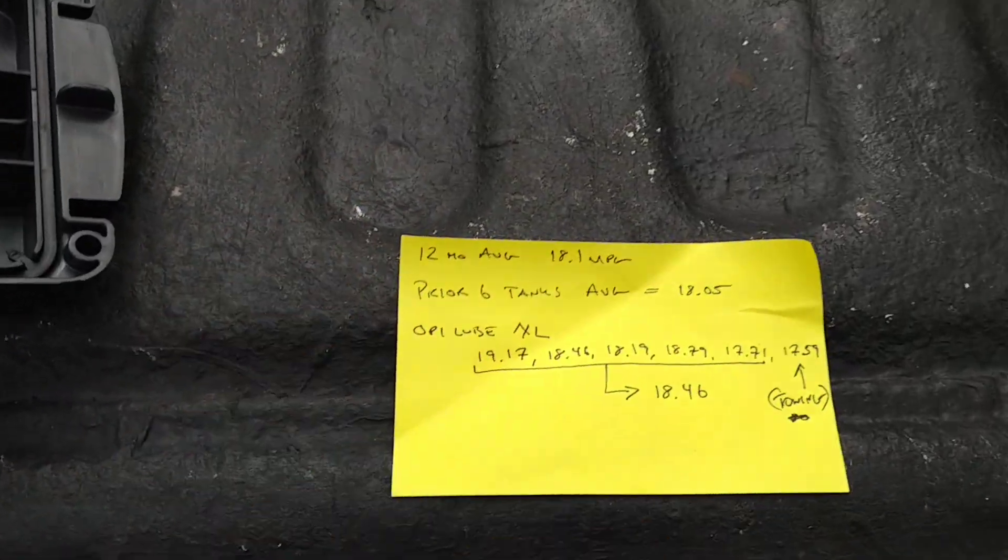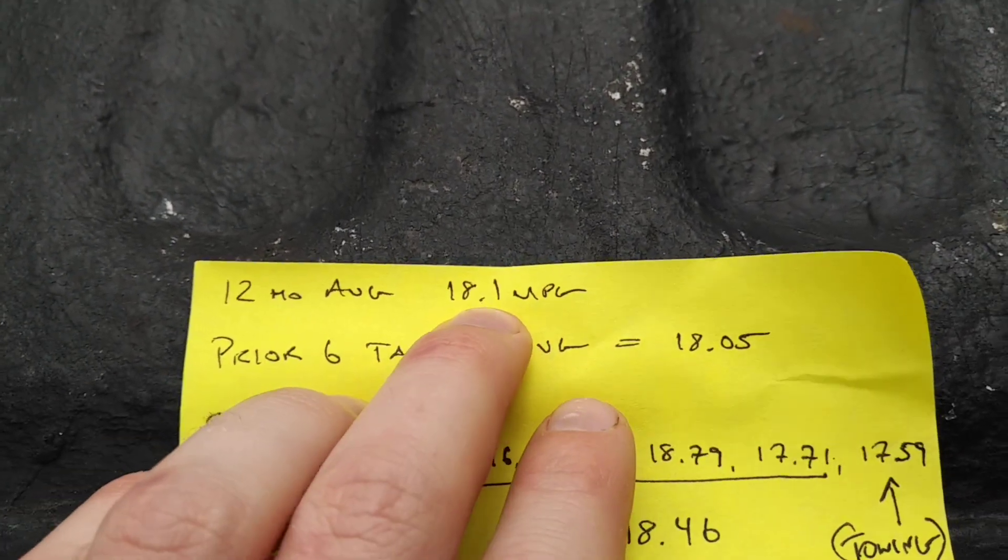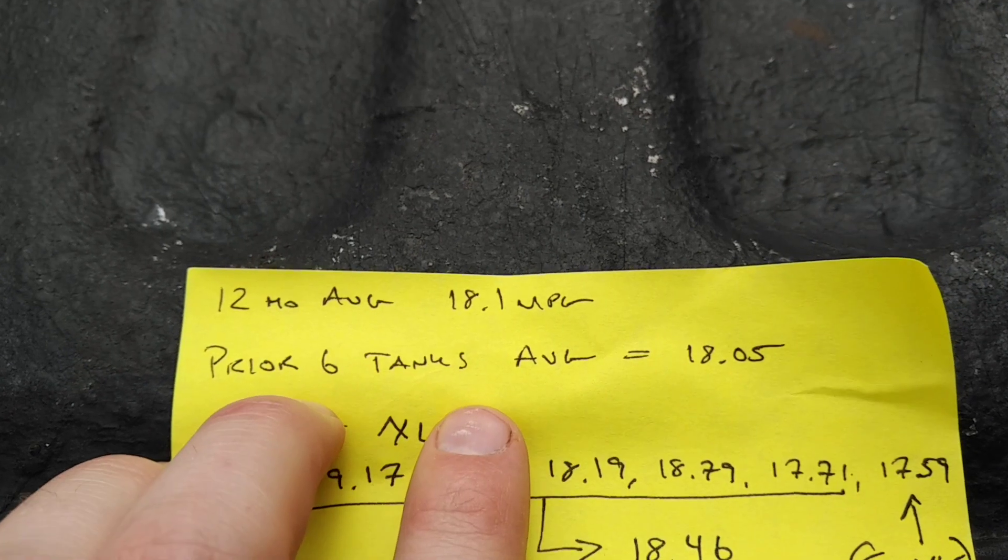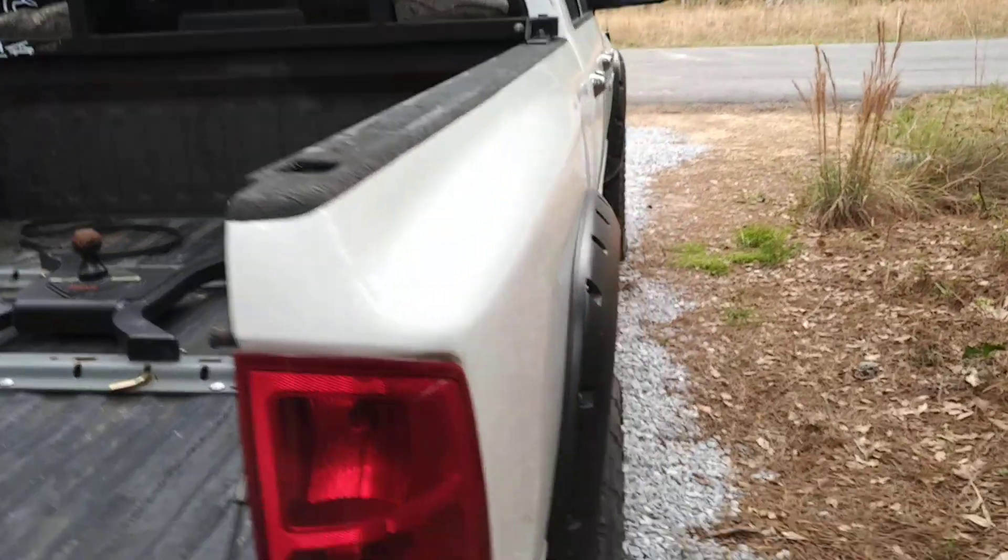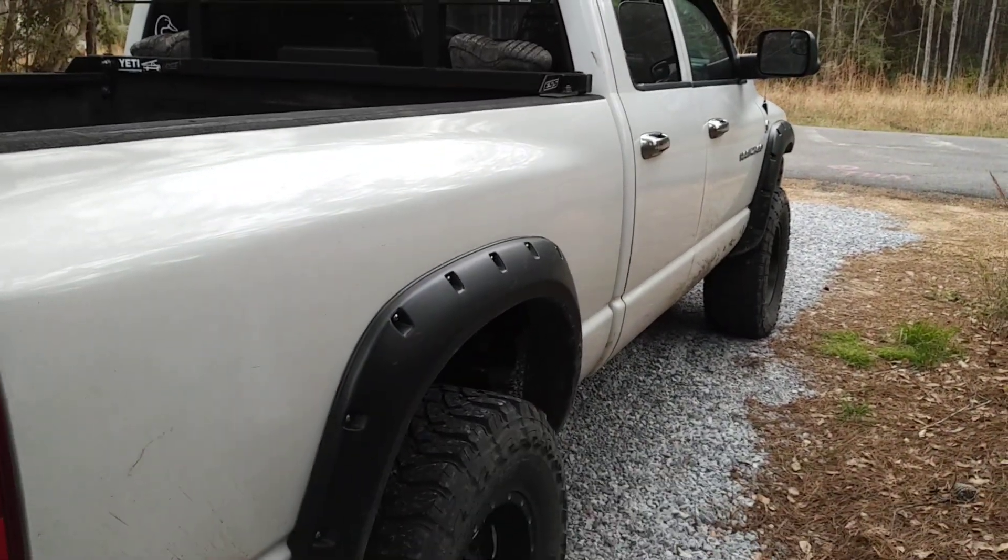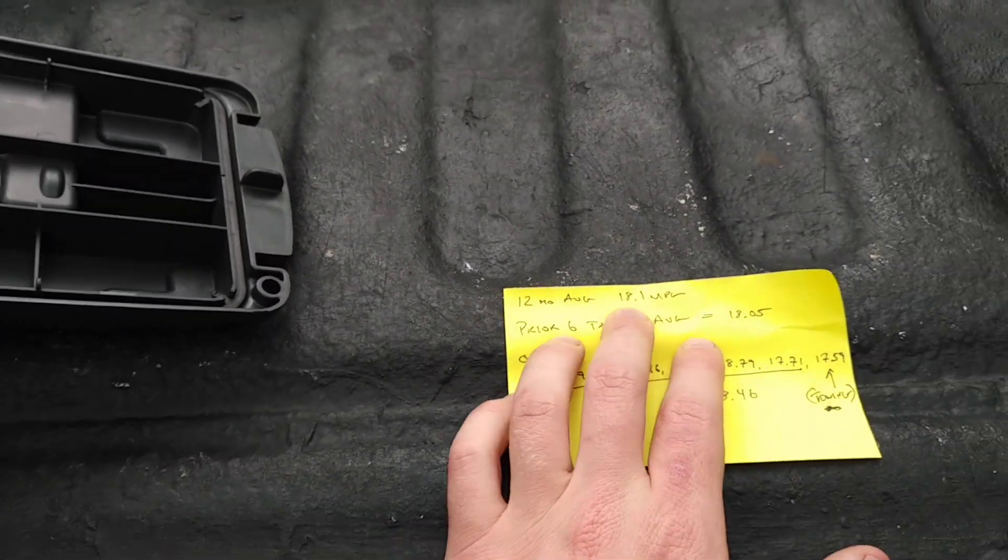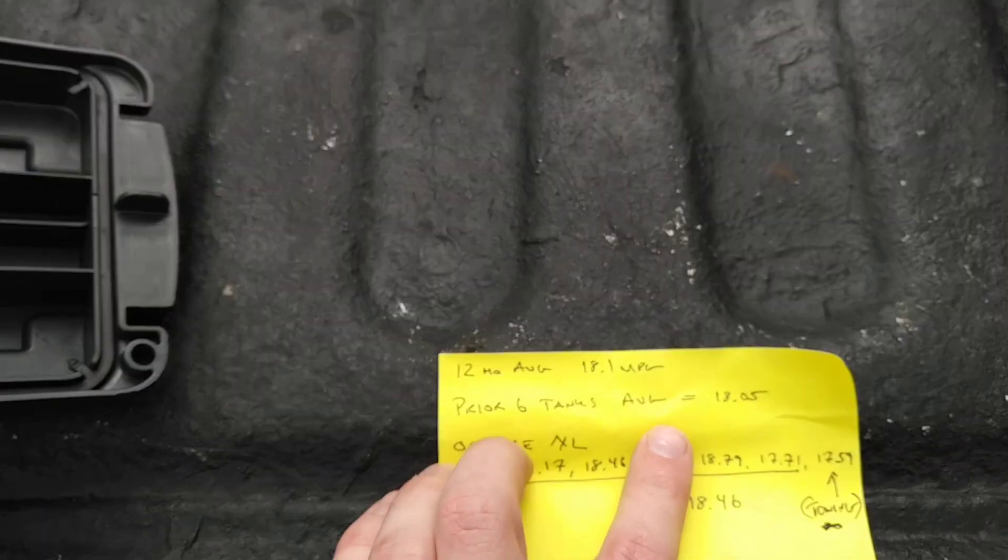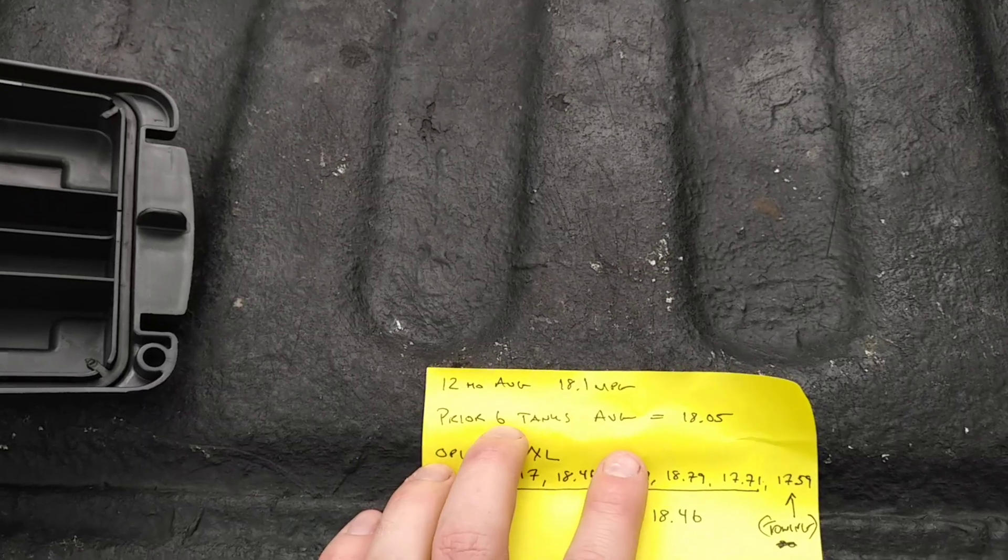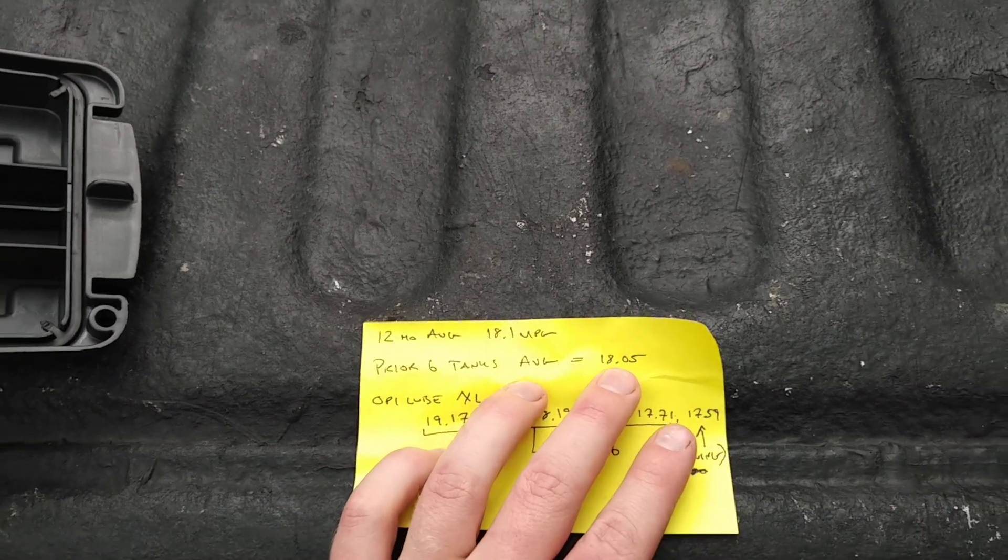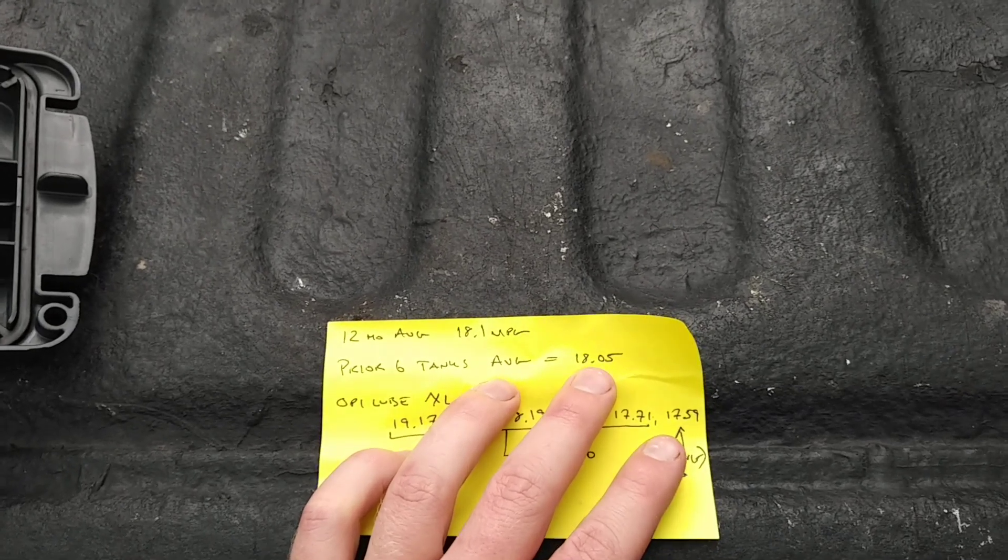So let's come over here and take a look at our fuel economy data. For the last 12 months we have averaged 18.1 miles a gallon. This is a 2003 Dodge Ram 2500 on 35 inch tires, diesel. I do almost 100 highway miles. The prior six tanks before I started testing this additive was 18.05.